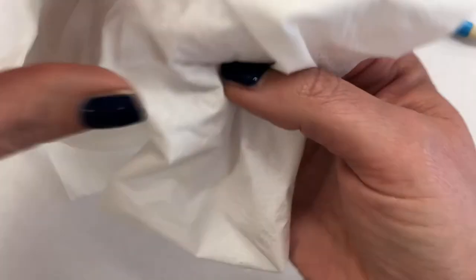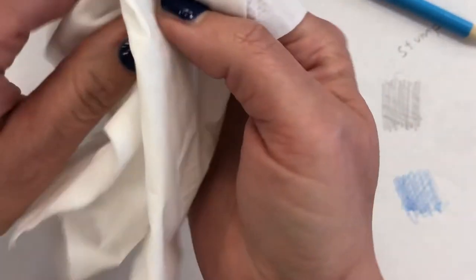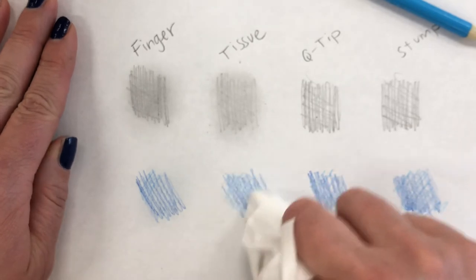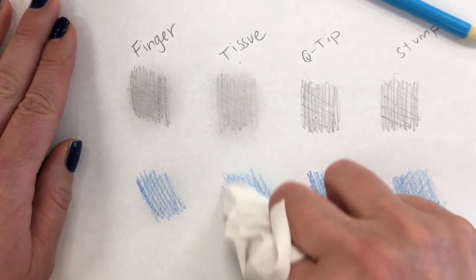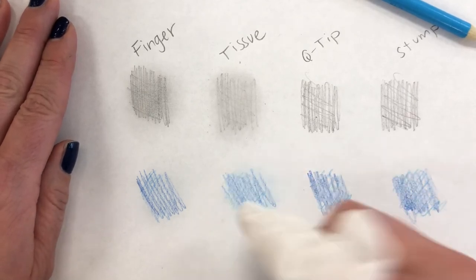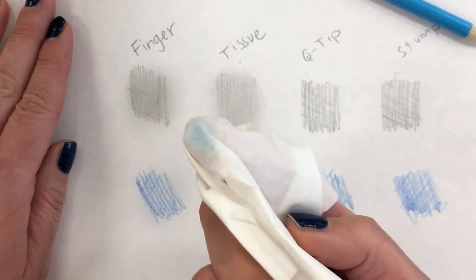Now I'm going to blend the colored pencil and I don't need to throw that away. Look, just get to a new clean little spot, rewrap your finger and rub to blend. Nice. Alright, you can see some of the pigment come off on the tissue.